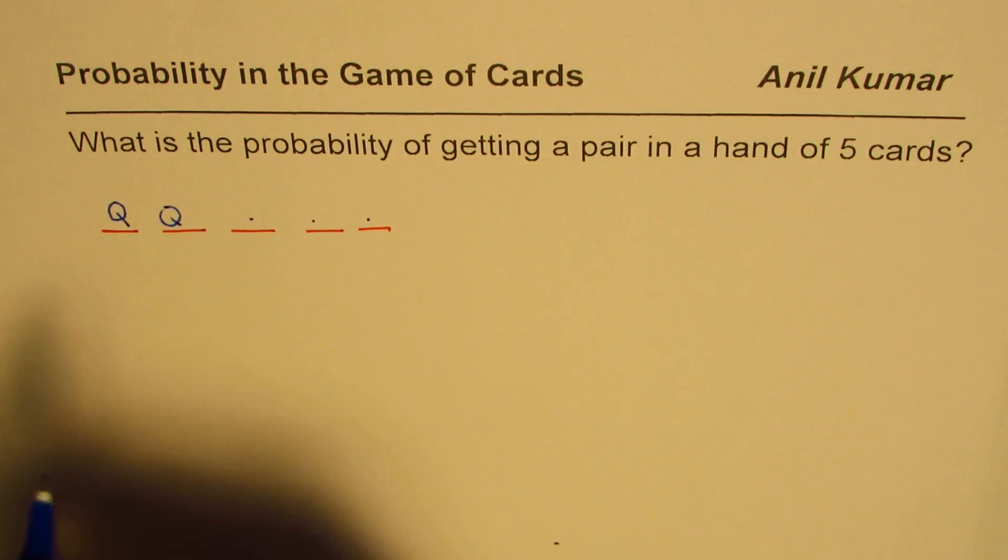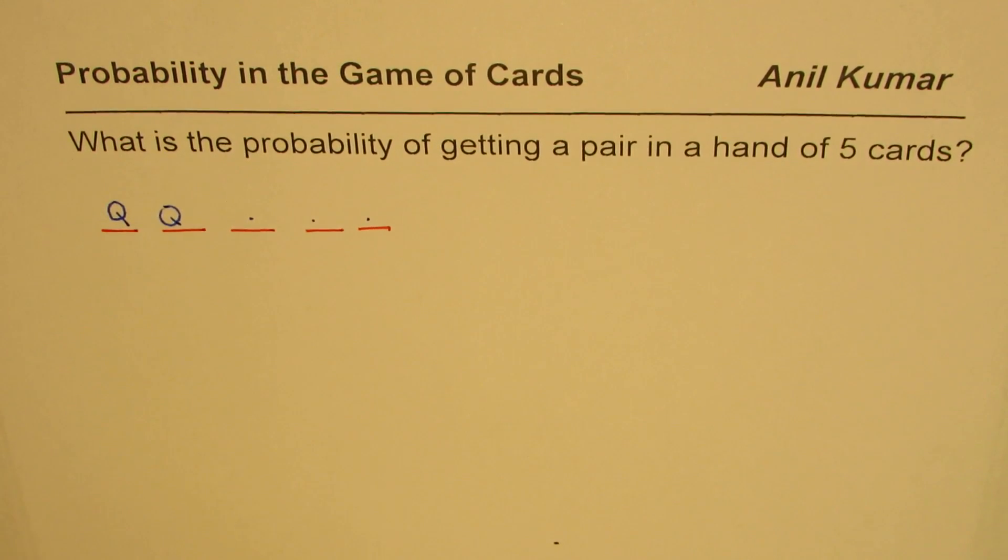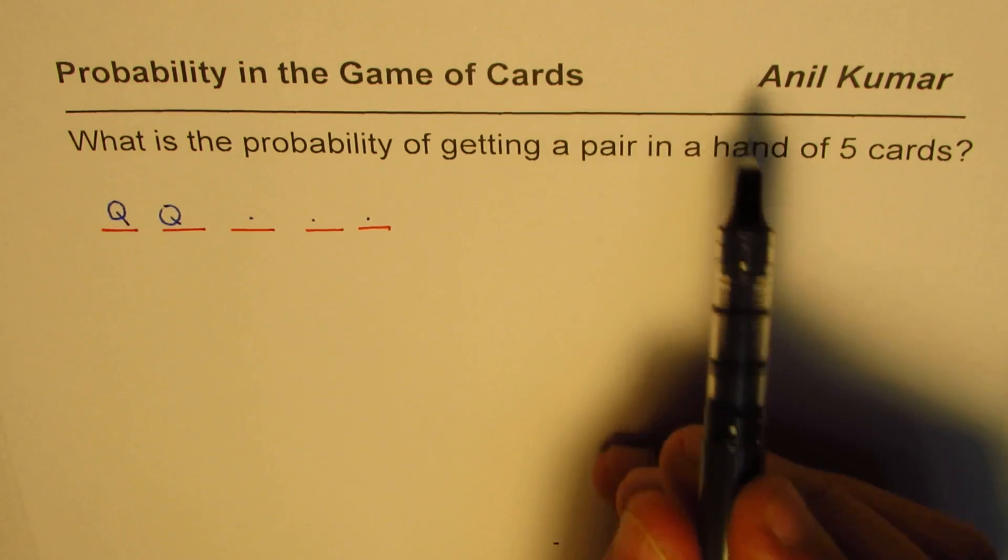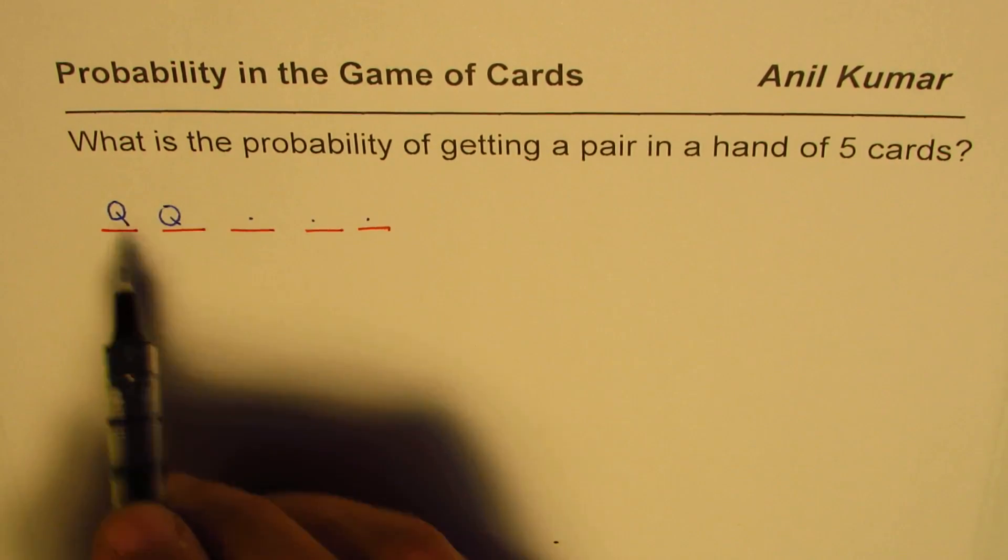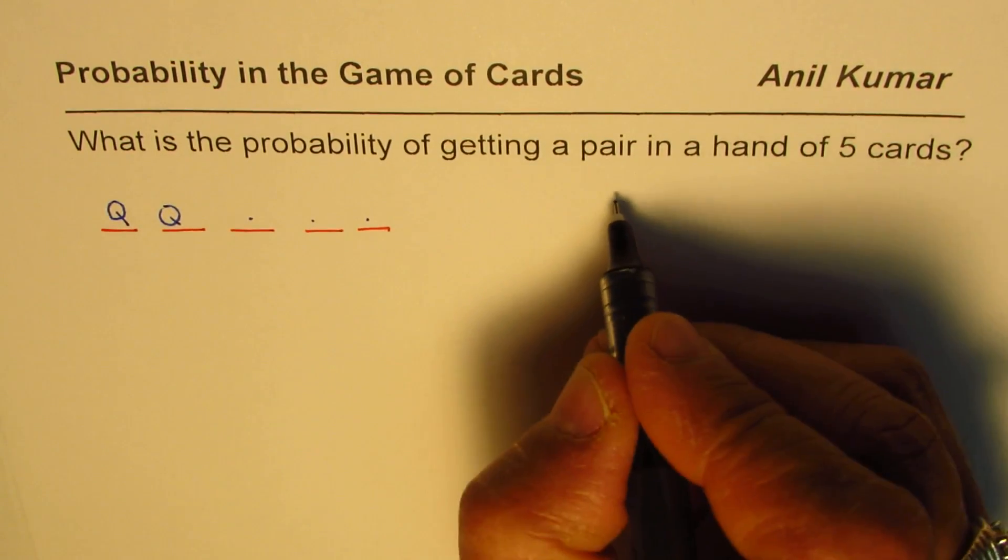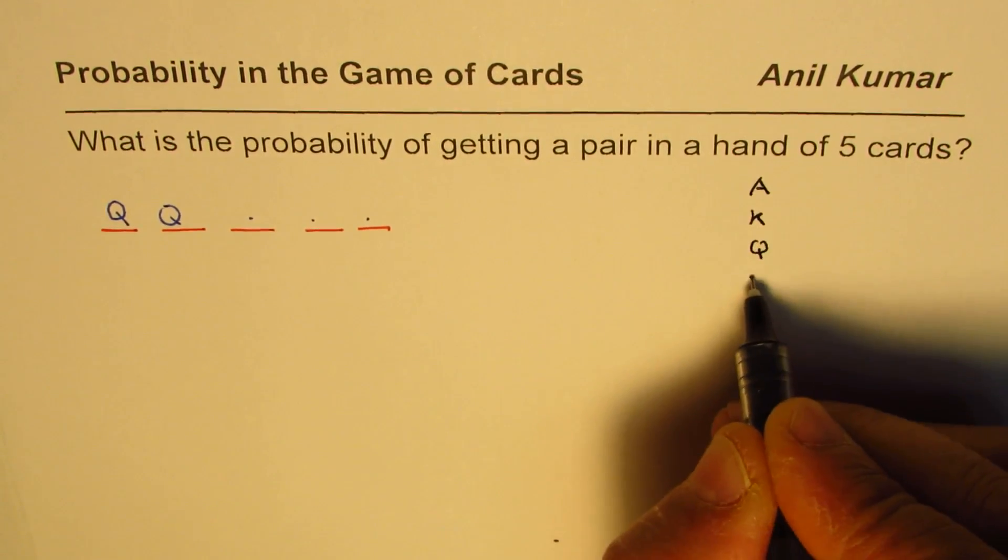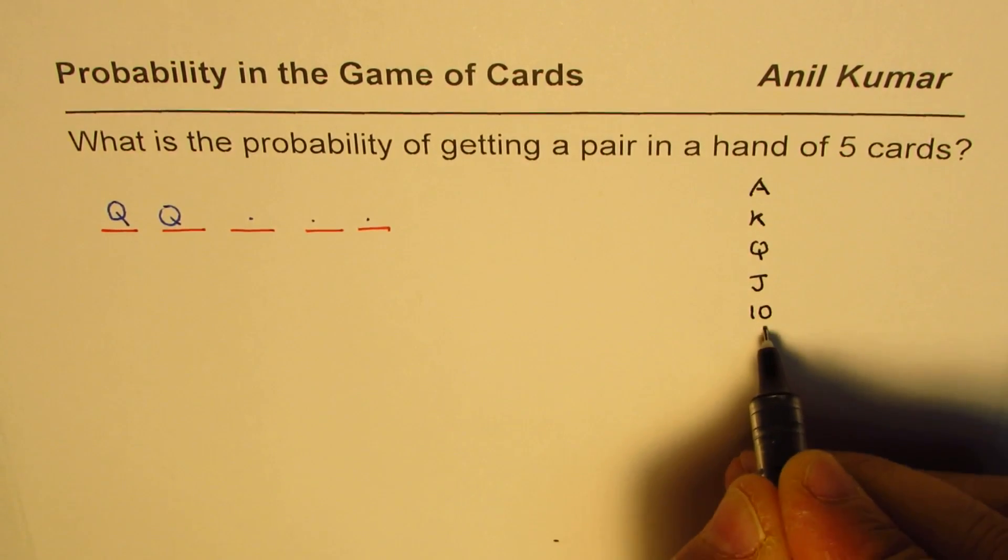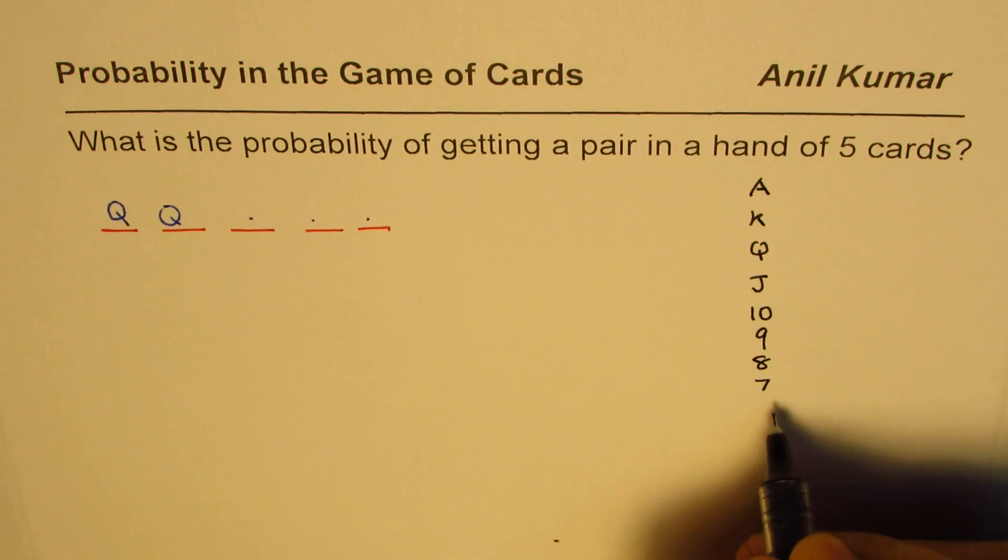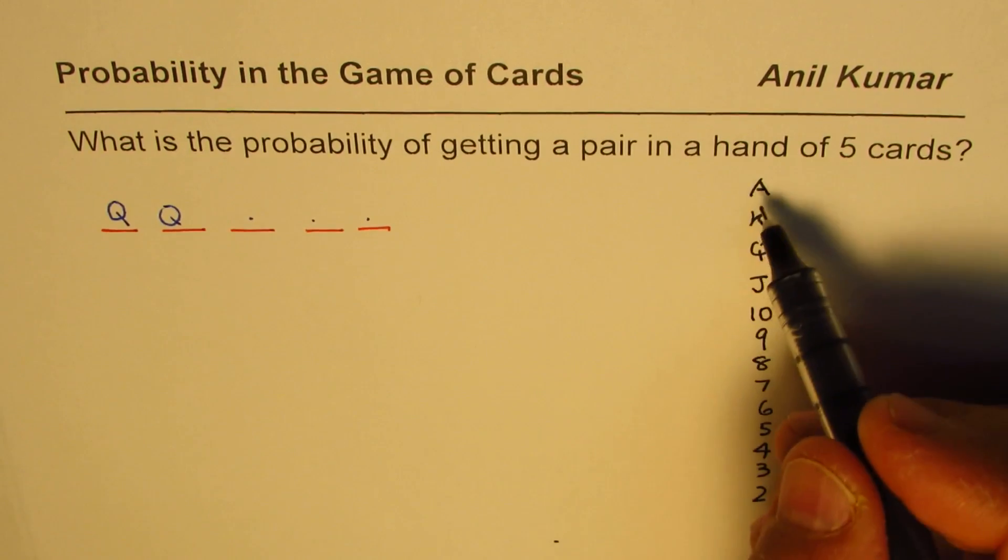You can pause the video, answer the question, and then look into my suggestion. In a game of cards there are 52 cards in all. When we're talking about value, we have cards like ace, king, queen, jack, 10, 9, 8, 7, 6, 5, 4, 3, 2.